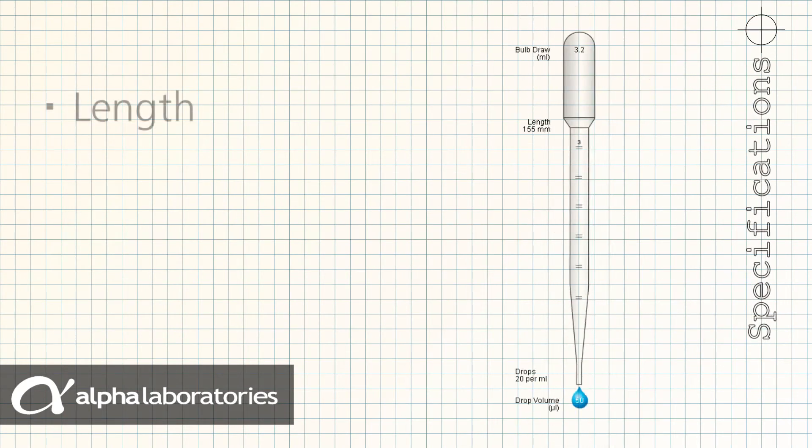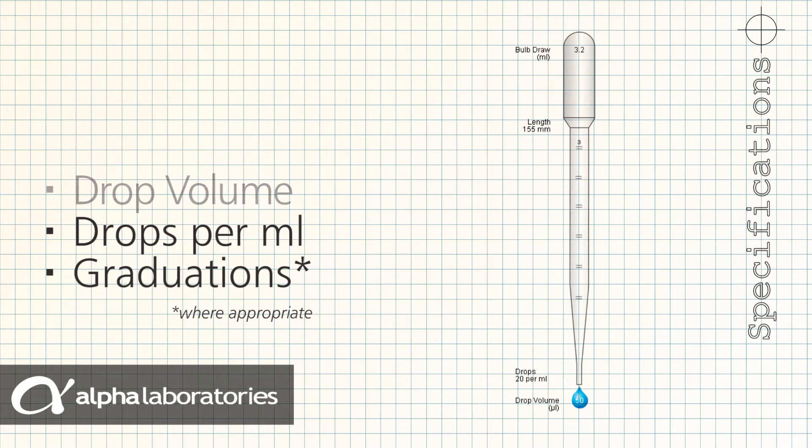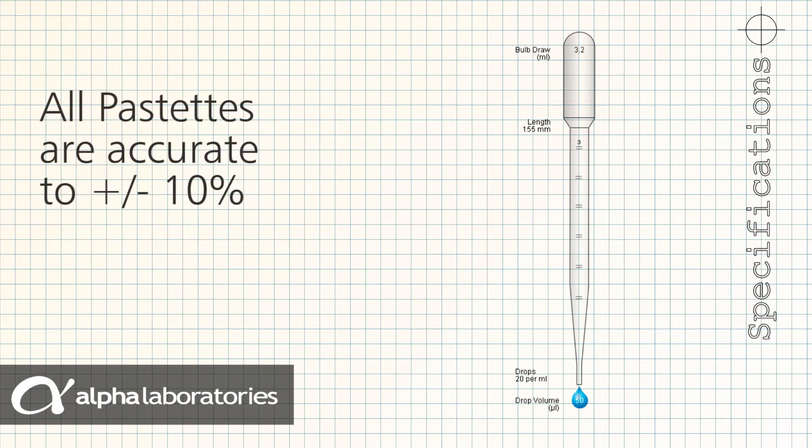Each pipette in the range includes specifications for length, bulb draw, drop volume, drops per mil and where appropriate graduation intervals, all of which are accurate to plus or minus 10%.